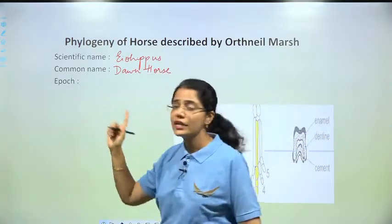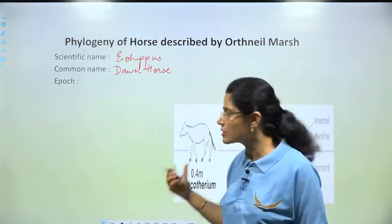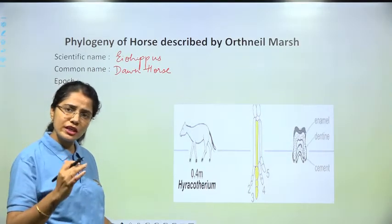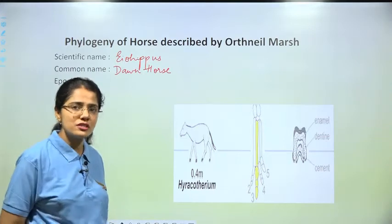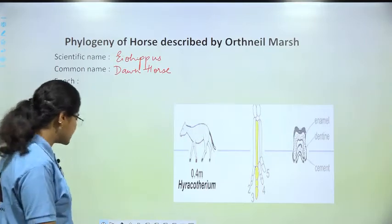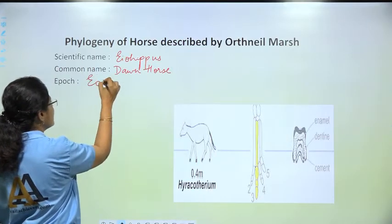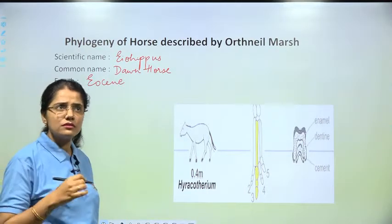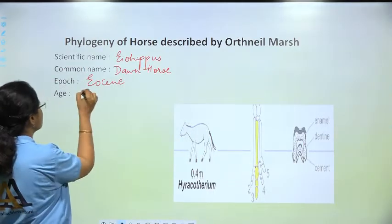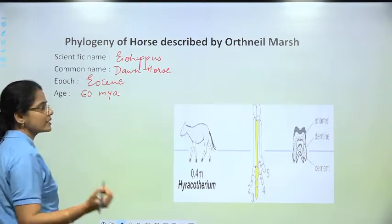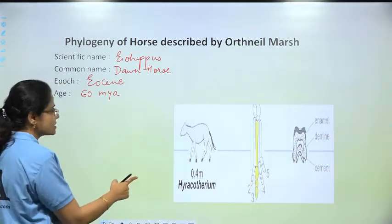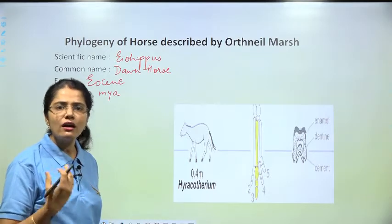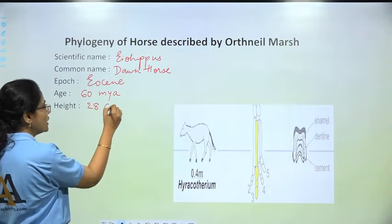Because we learn about these horses from fossils, this is part of the paleontological evidence. The fossils were in such good condition that we could determine the size and many features. Eohippus existed in the Eocene Epoch, some 60 million years ago, and its height was approximately 28 centimetres.